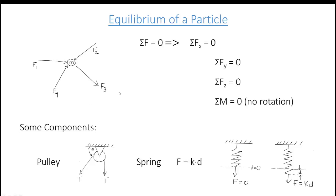In static problems, there are components we use to transfer forces, or components proportional to displacement. The first component is a pulley. A pulley has tension in the cable, and if it's a static problem, the tension has to be the same on both sides — otherwise one side would move relative to the other. So when we talk about a pulley, the tension is the same on both sides.